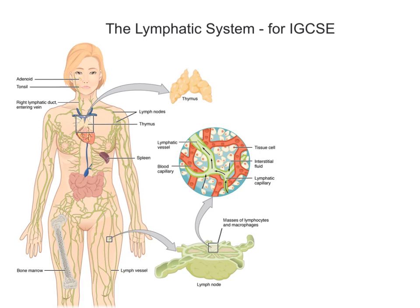Hello everyone. In this video we're going to do a very quick introduction to what's called the lymphatic system. This video is designed for those studying the biology IGCSE, specifically the topic of transport in animals, which forms part of the body of work about the circulatory system. When you think about the circulatory system you think about arteries, veins and capillaries — but there is another type of circulatory vessel: the lymphatic vessel.